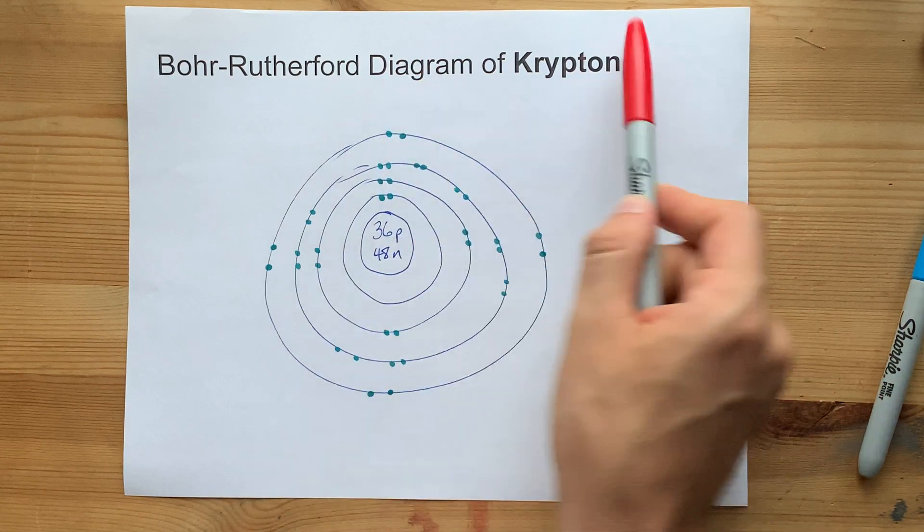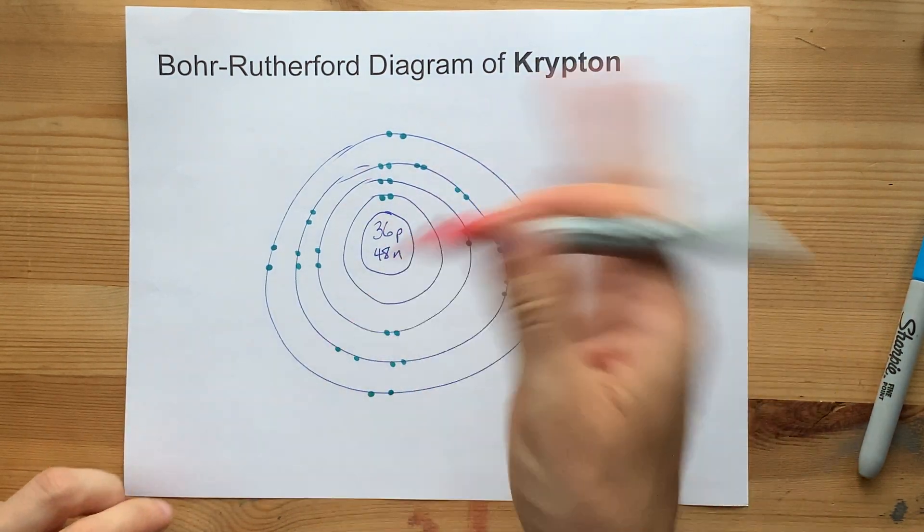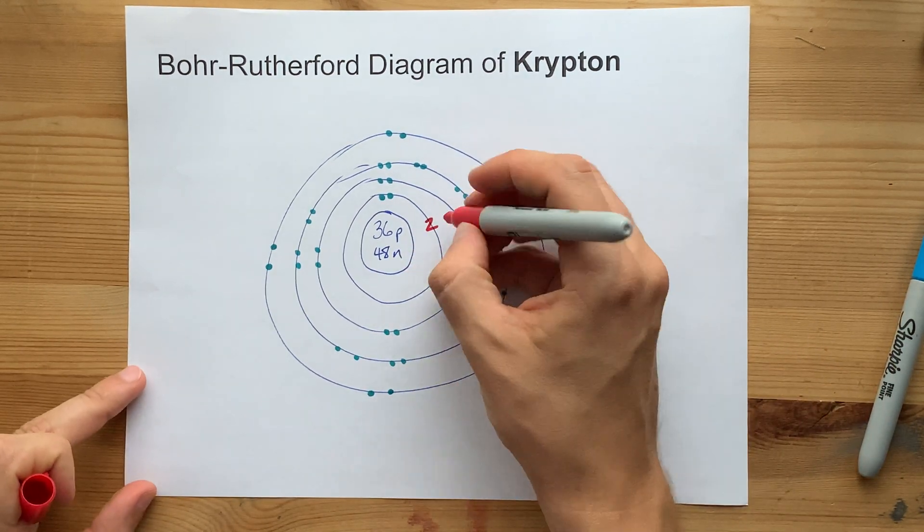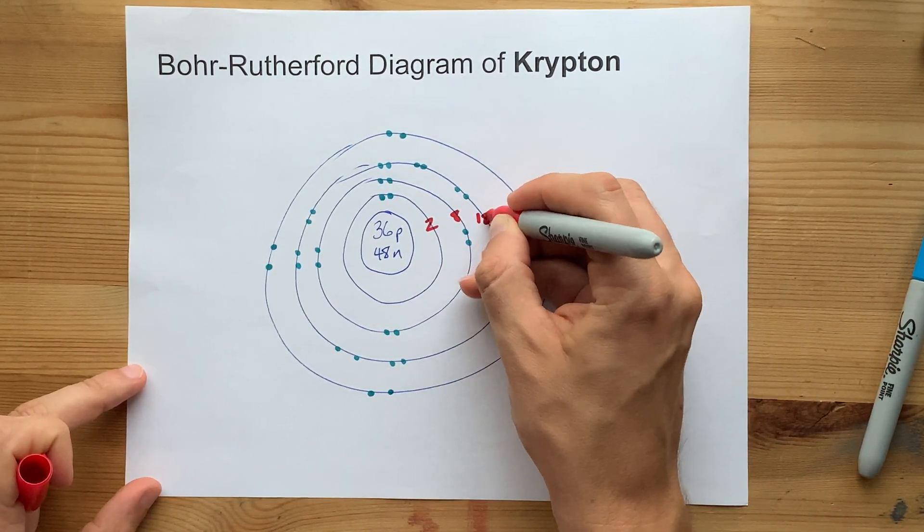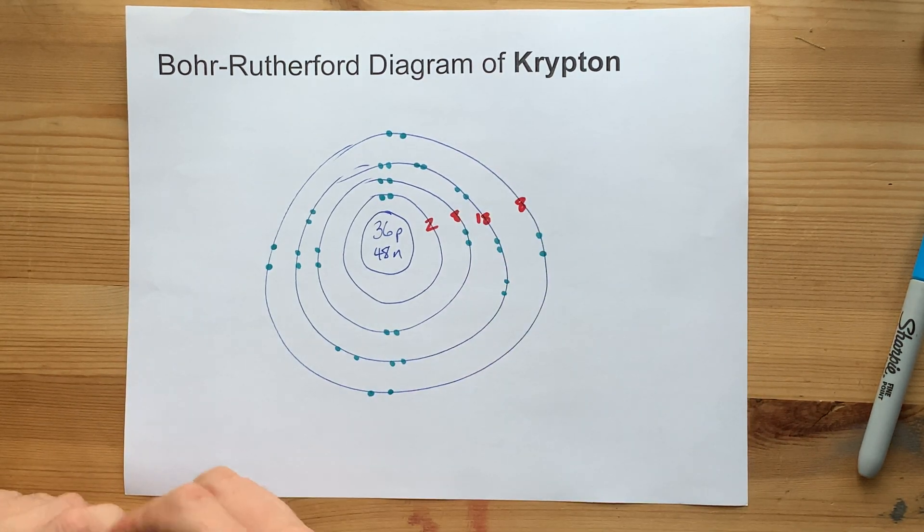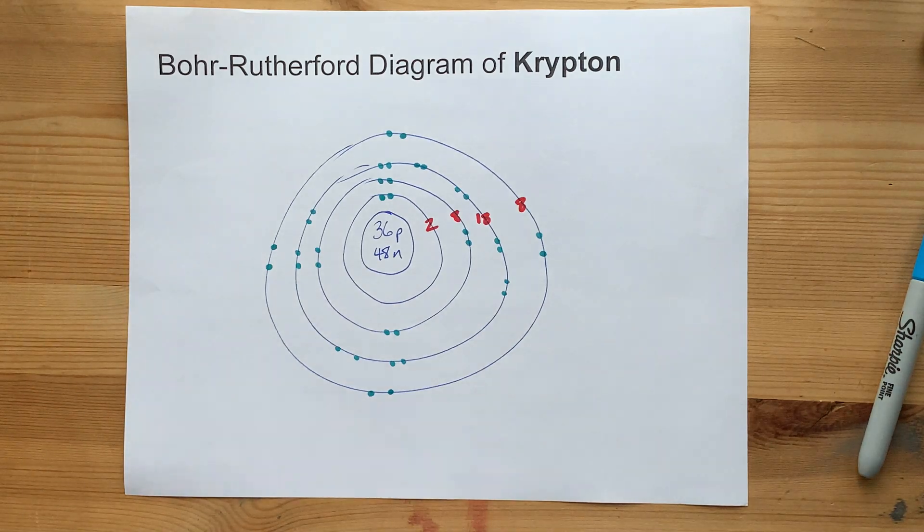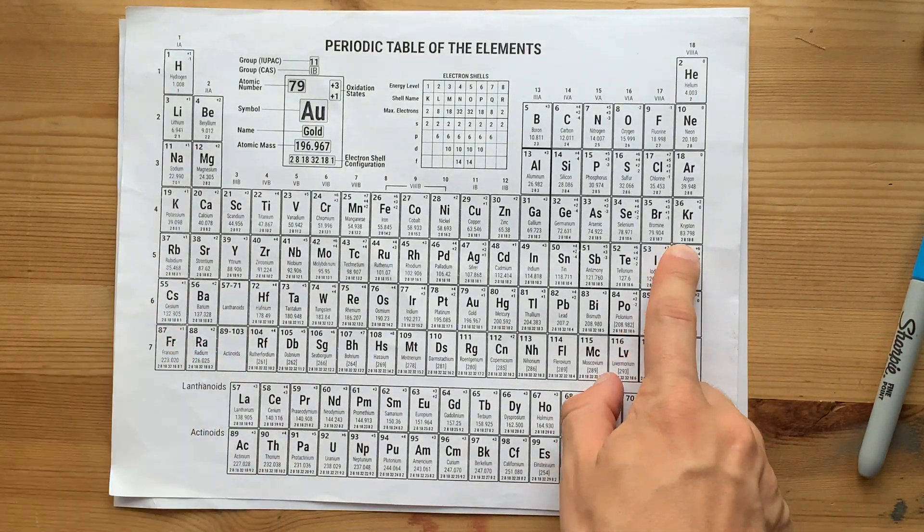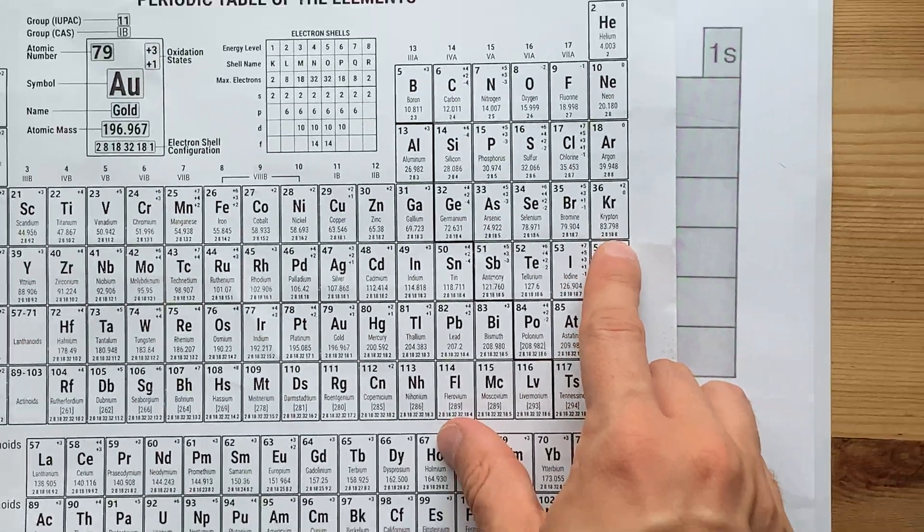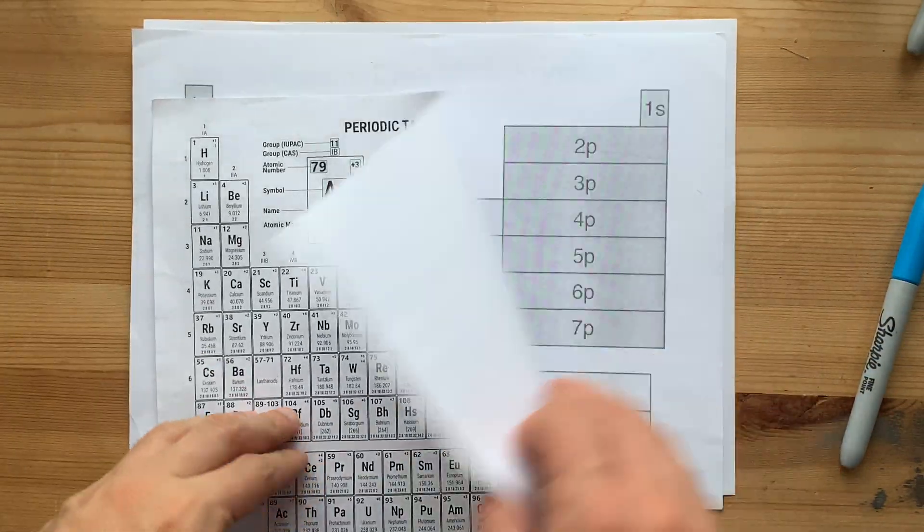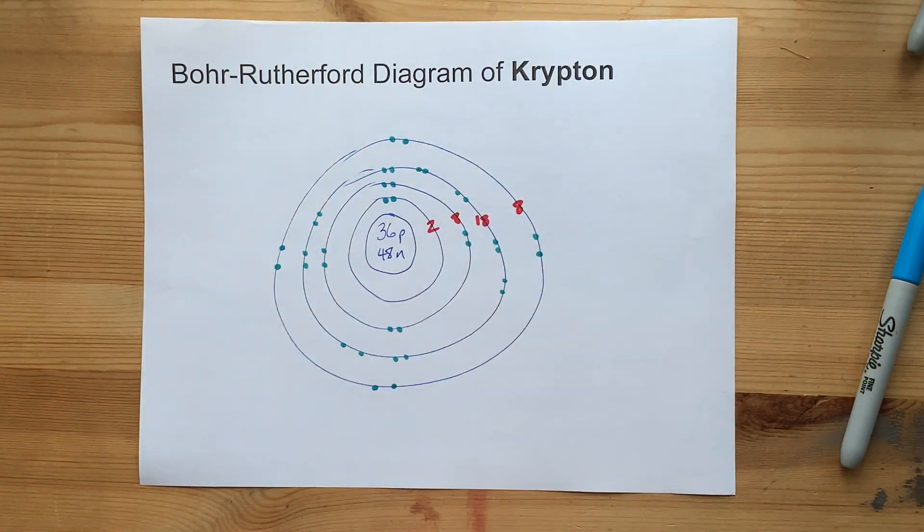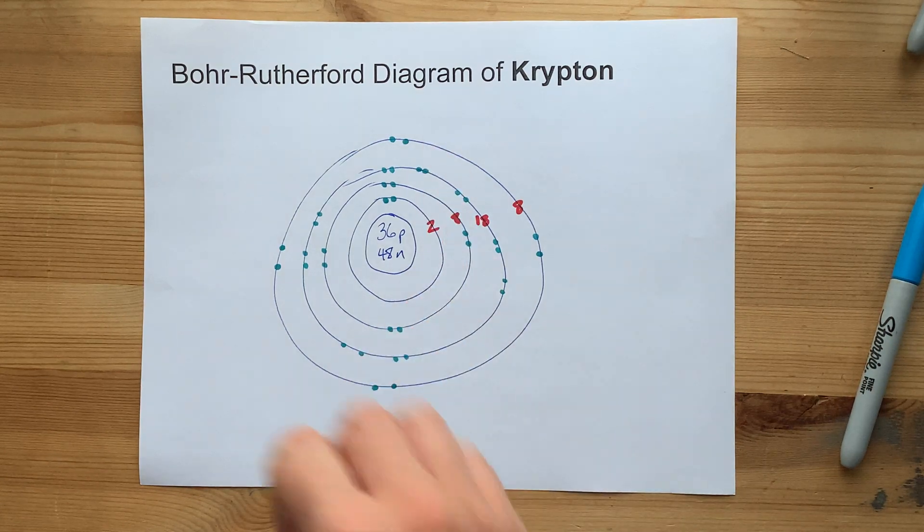So the Bohr-Rutherford diagram of Krypton has the protons and neutrons in the center as always, two electrons in the first shell, eight in the second, 18 in the third, and eight in the fourth. In case you're wondering, yes, there was a spoiler on my personal periodic table here. It says Krypton is two, eight, 18, and eight. Oh well. Good thing we know how to use the periodic table. Am I right? There's your Bohr-Rutherford diagram. Boom. Best of luck.